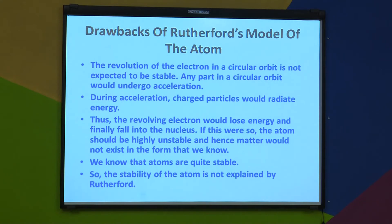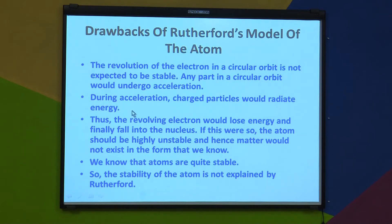Now let us see the drawbacks of Rutherford's model of the atom. The revolution of the electron in a circular orbit is not expected to be stable. Any particle in a circular orbit would undergo acceleration. During acceleration, charged particles would radiate energy, and if the electrons radiate energy, they would lose energy and finally fall into the nucleus.